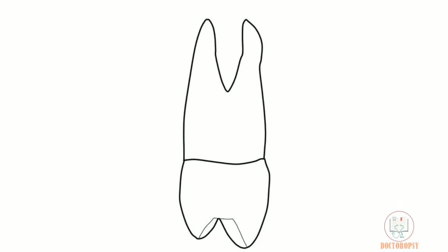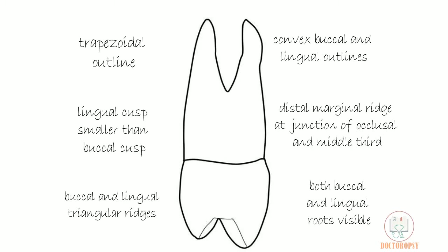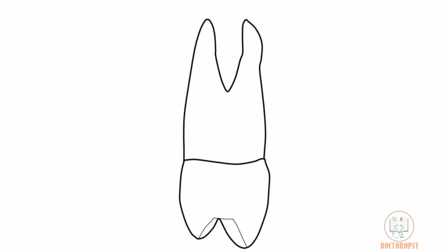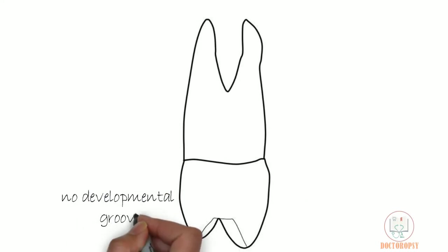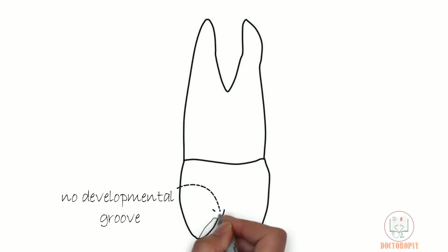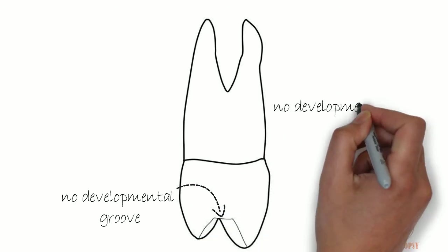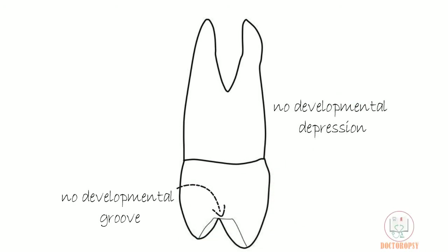The distal aspect is the same as the mesial aspect, except for two differences: no developmental groove is seen on the distal marginal ridge, and no developmental depression is seen running along the long axis of the tooth.